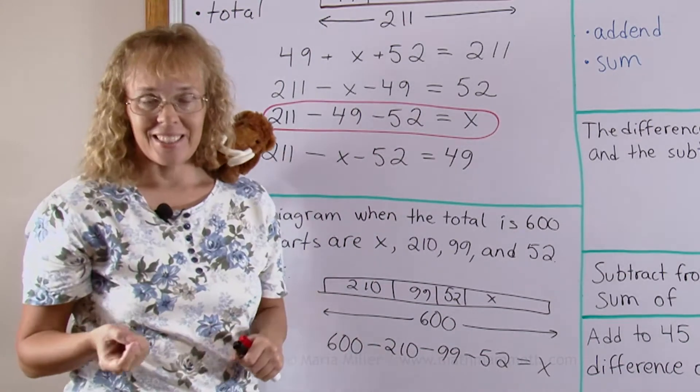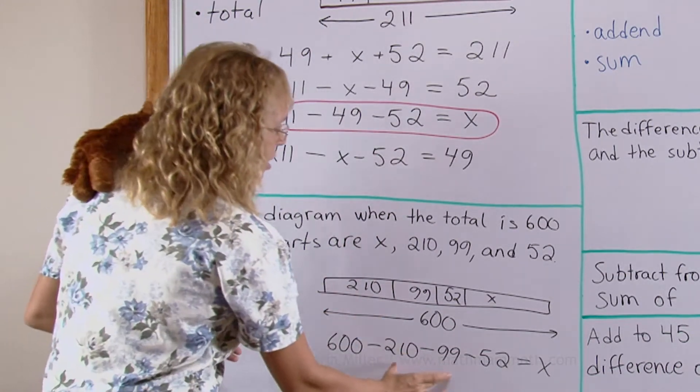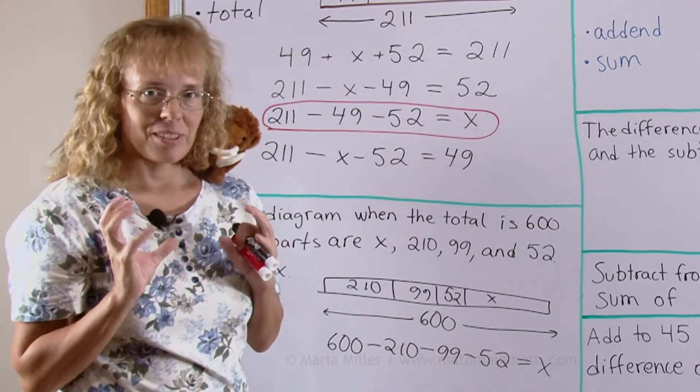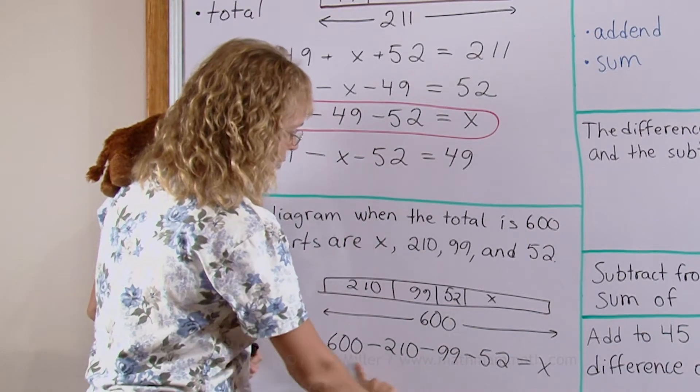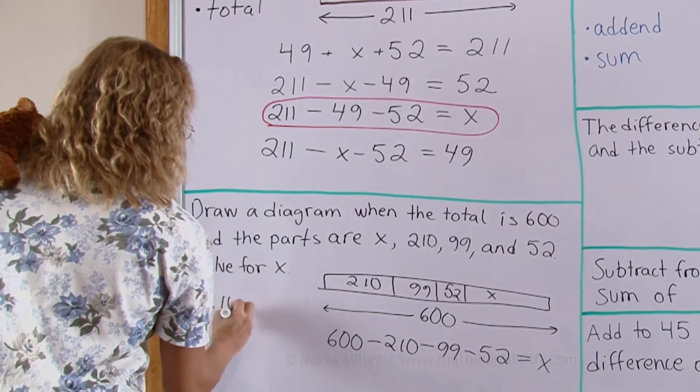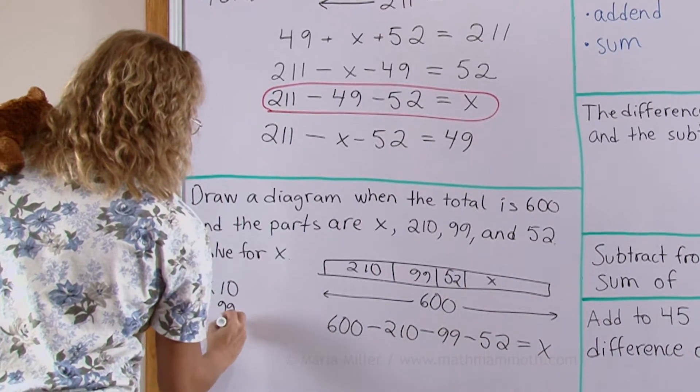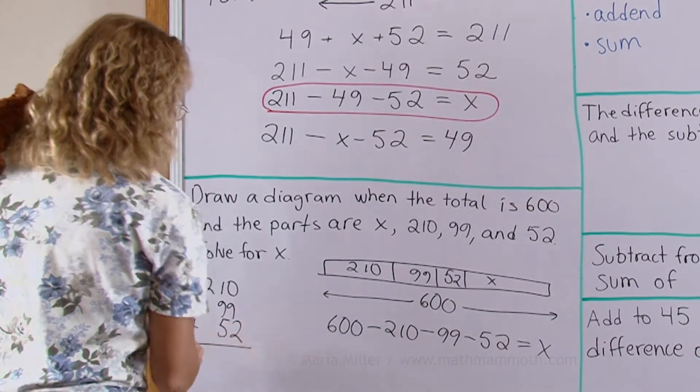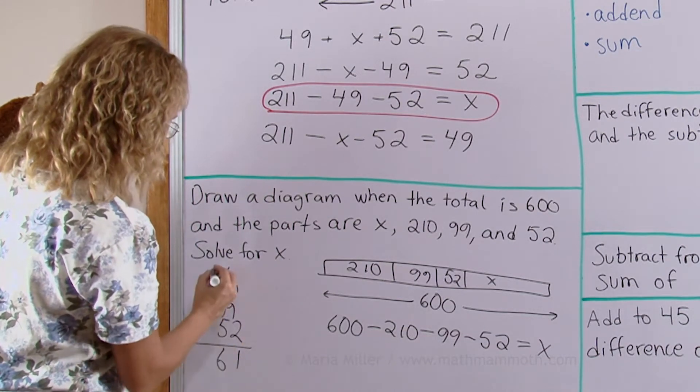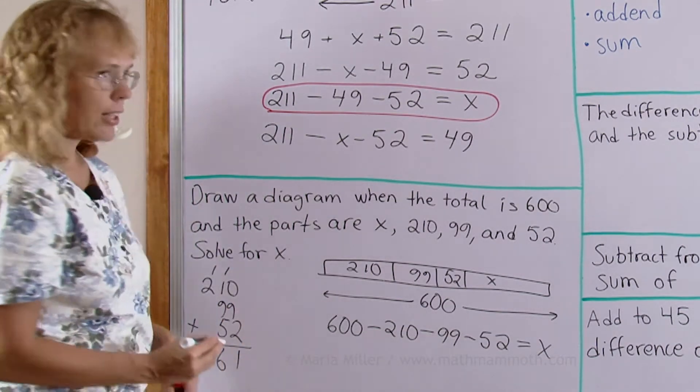Now in practice if I want to subtract those three I can first add those three together and as a lump sum so to speak subtract from 600. So let me do that here. I will add those three different parts here. 2 plus 9 is 11 and here we get 16. Okay, 361.